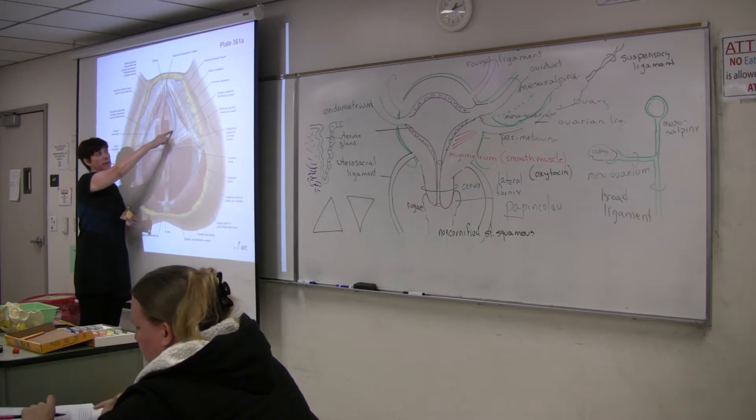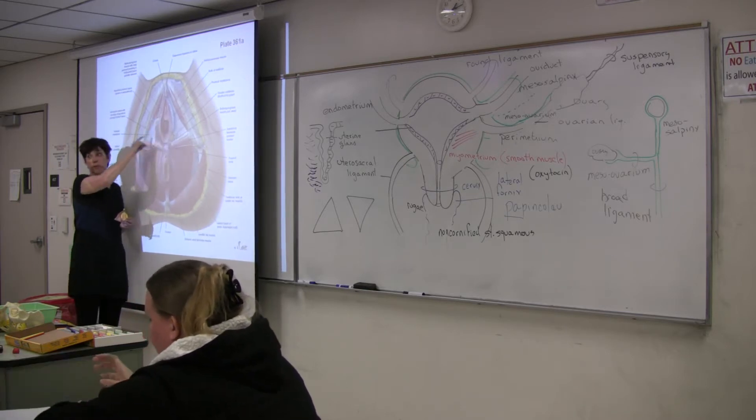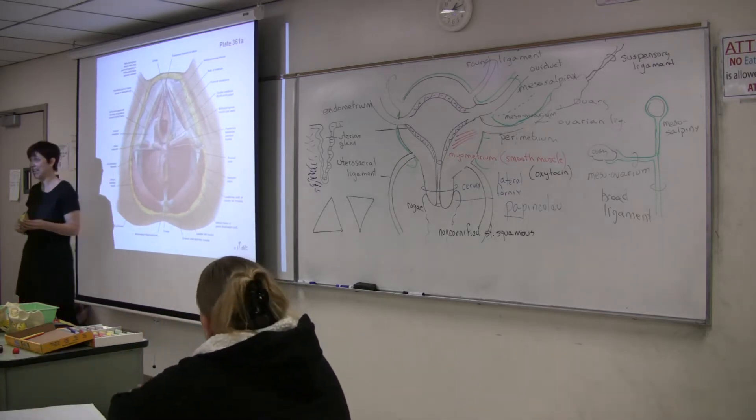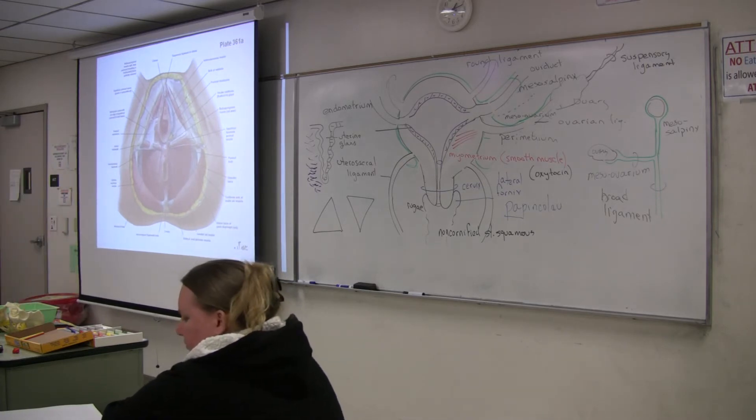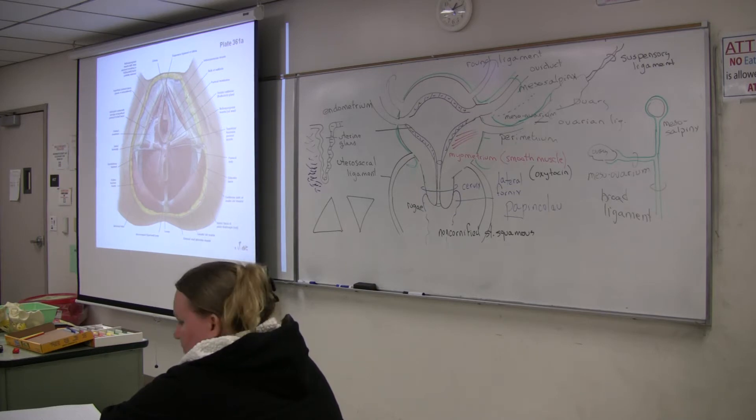Here is the bulb covered by the bulbospongiosus. They don't fuse. The bulbospongiosus doesn't fuse like it does in the male. We have two separate distinct pieces of erectile tissue.